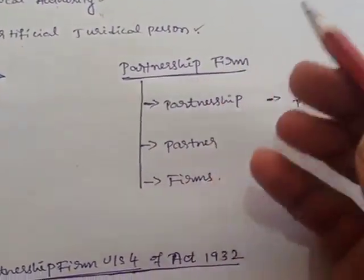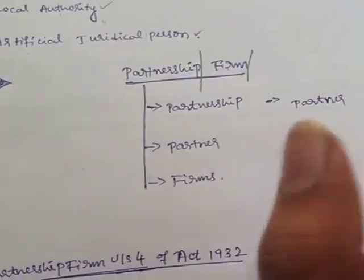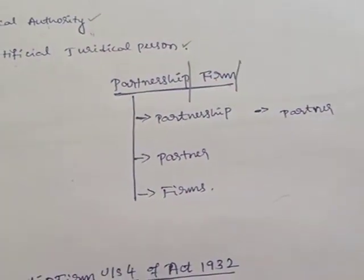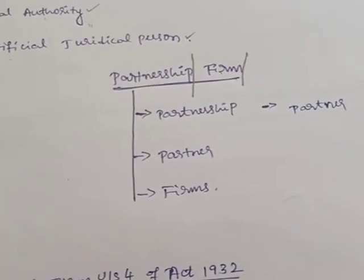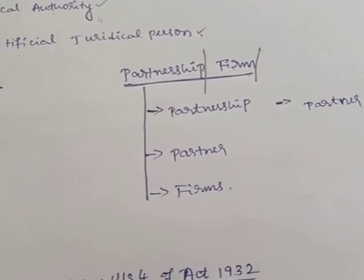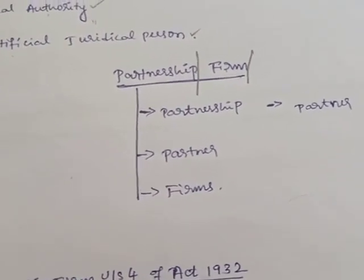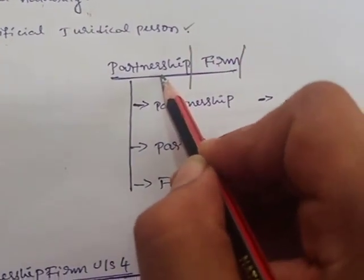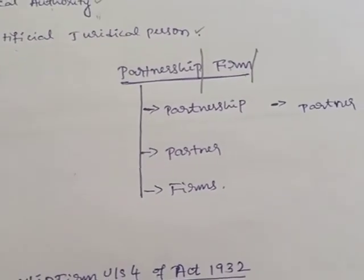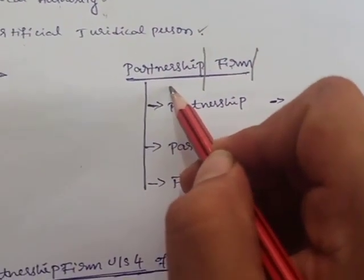Partnership firm. Here the word partnership has two parts — partner and firm. Under the income tax point of view, the partnership may be either a registered firm or an unregistered firm — there is no discrimination. It is not mandatory for every partnership firm to be registered to pay tax. Registration is optional. There is no separate definition provided under income tax, but whatever definition is mentioned under Section 4 of the Partnership Act, 1932, the same definition will be applicable for income tax also.